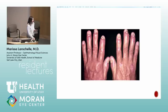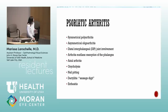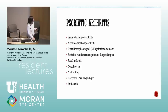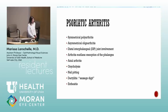Psoriatic arthritis is the fourth B27-related syndrome. You get nail pitting and resorption of the phalanges — literally the arthritis is erosive, resorbing the bones. Importantly, uveitis only happens with psoriatic arthritis, not in patients with psoriasis alone, so you must ask about arthritis changes.